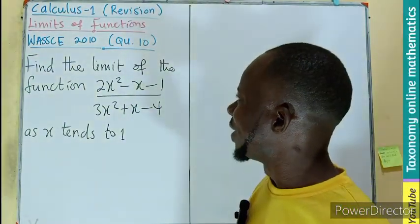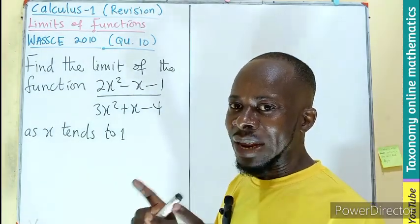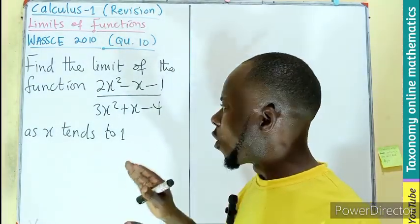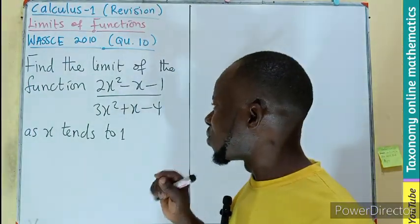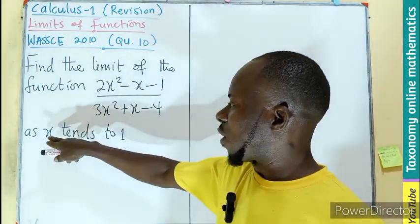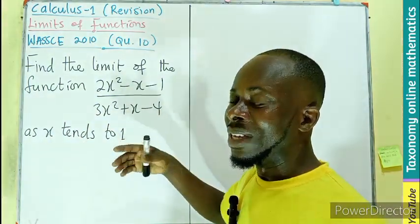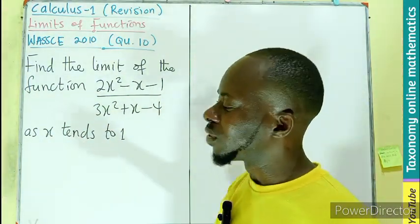We have to find the limit of the function 2x squared minus x minus 1, all divided by 3x squared plus x minus 4, as the values of x tend to 1. This is the limit as x approaches 1.